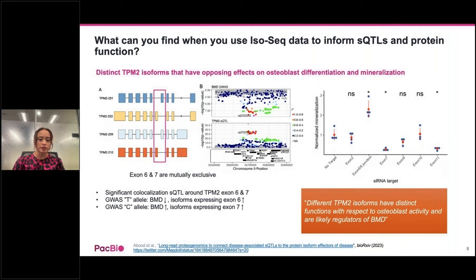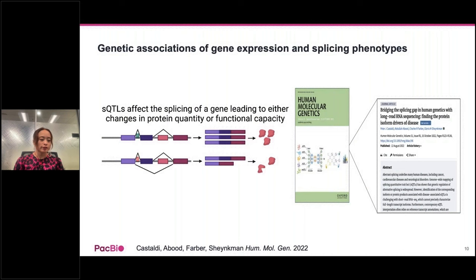The publication shows that to fully understand disease, simply adding sQTL data is insufficient. Full-length isoform information adds functional interpretation, which ultimately can lead to identifying the protein isoform drivers of disease.